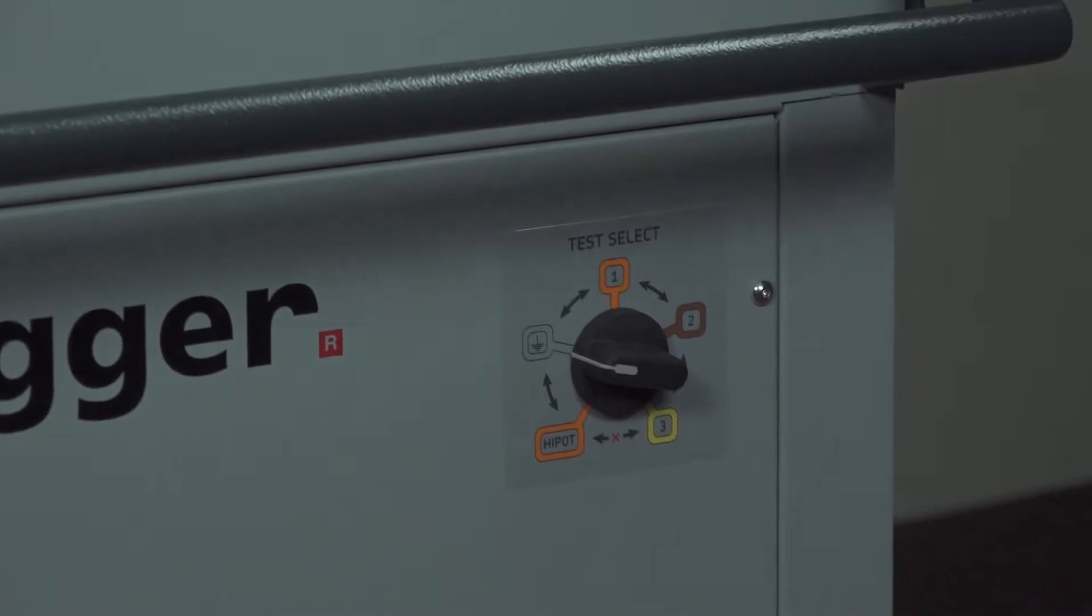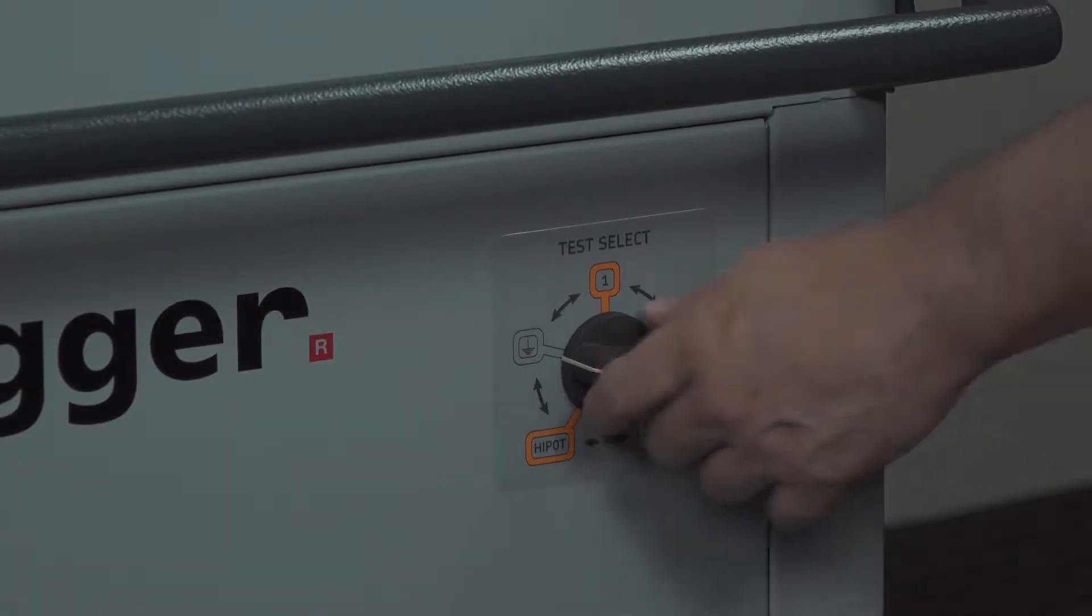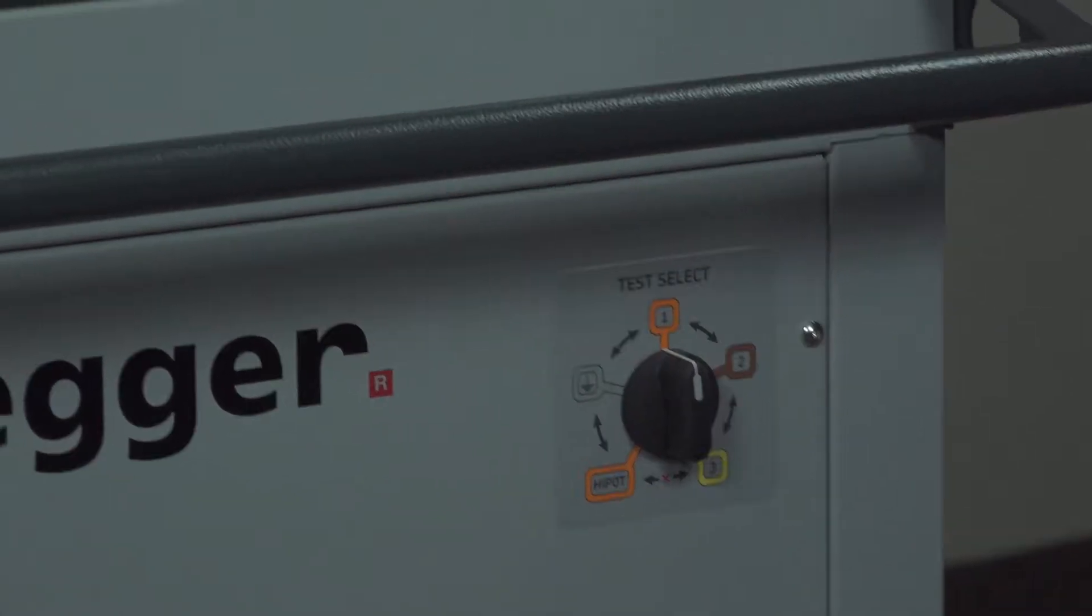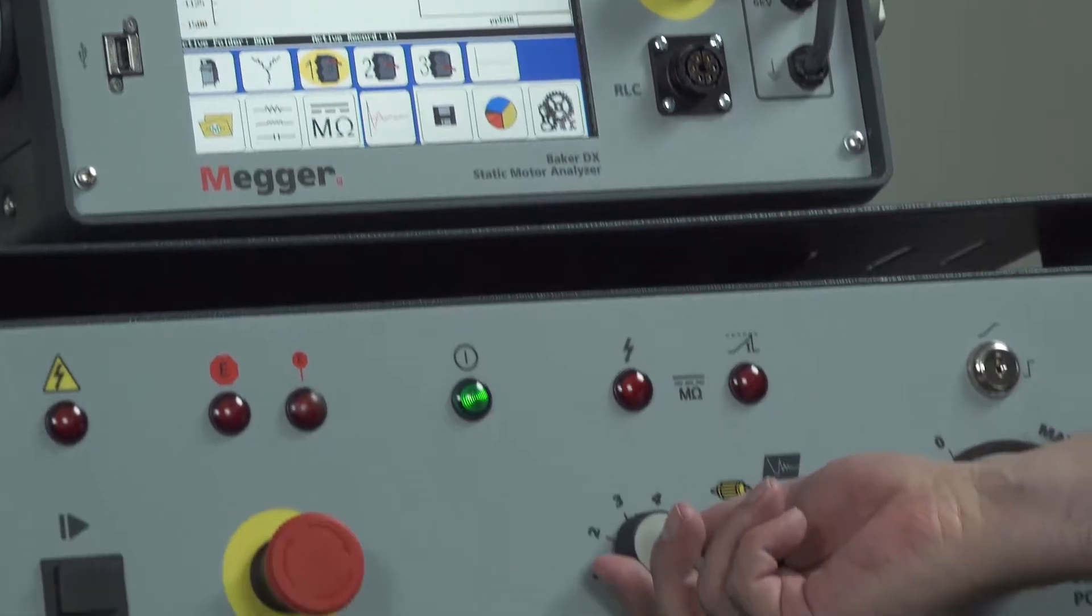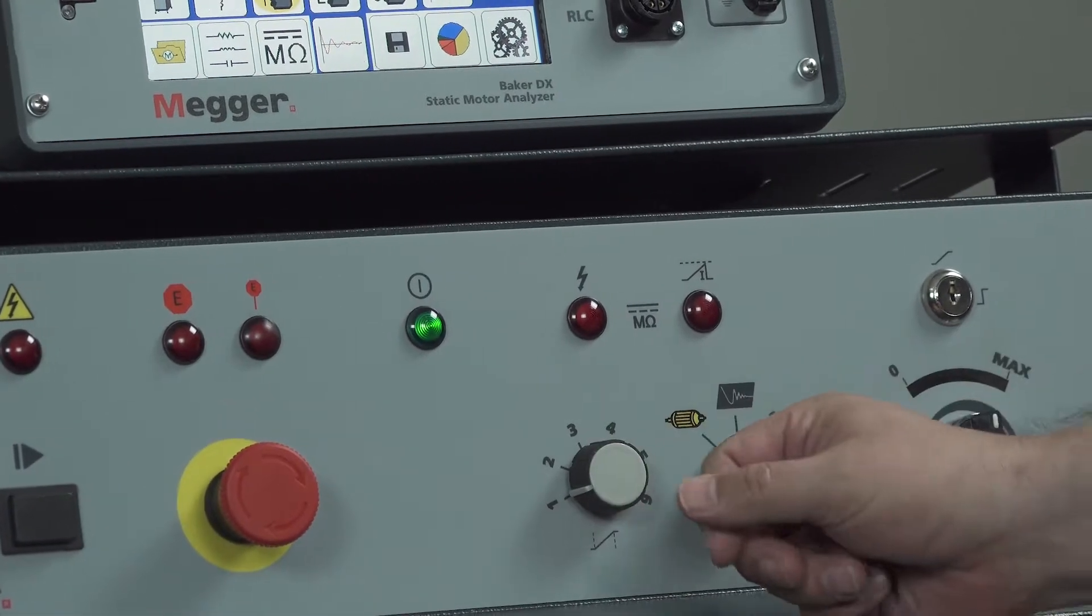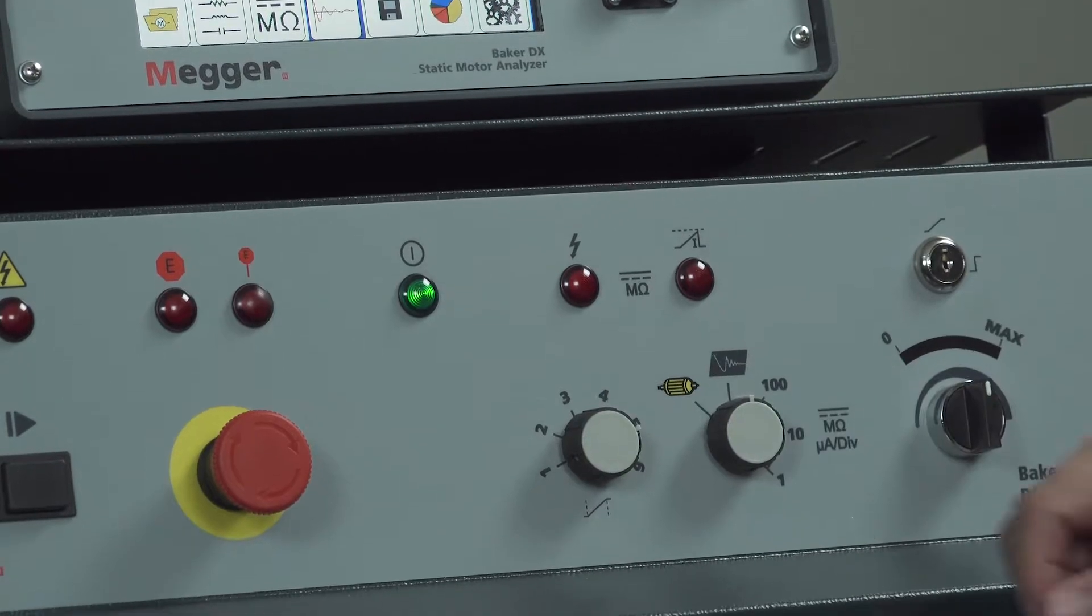The next thing we want to do since we're going to test on lead one, is we need to take the test lead selector switch to the lead one position. Ensure you select the proper ramp rate that you want. One being the fastest, six is the slowest. For this demonstration I'm going to select five.